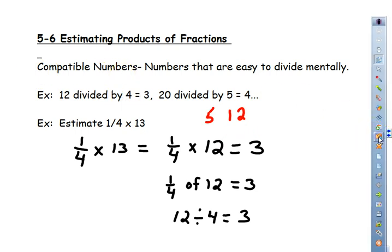If you haven't hit pause to go ahead and copy these notes down, please make sure you go ahead and do that. I'll give you a few seconds to do that. So for example, again it has 12 divided by 4 equals 3. That's compatible numbers. 4 is compatible with 12. 20 divided by 5 equals 4. So 5 is compatible with 20.